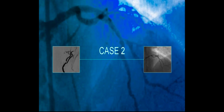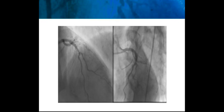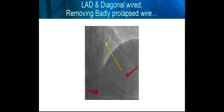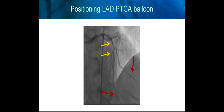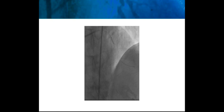Our second case — a little bit more challenging bifurcation with some other pointers. Here you can see a typical LAD diagonal bifurcation, a little bit more disease in the diagonal, a little bit more angulation. Learning a lesson from the first case, notice how that first wire was pretty prolapsed. Rather than trying to redirect a badly prolapsed wire, we used that as a buddy wire, put a second wire into the diagonal, and now we have a good wire in the diagonal. With two wires we prep the LAD — there's our balloon for preparation and positioning. Here is the angioplasty in the LAD, and now we do our preparatory angioplasty in the diagonal while assessing LAD preparation. And there's our balloon angioplasty of the diagonal.